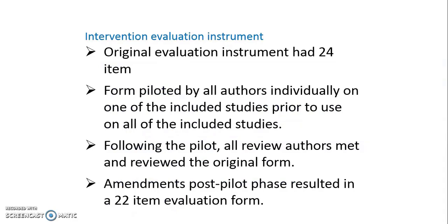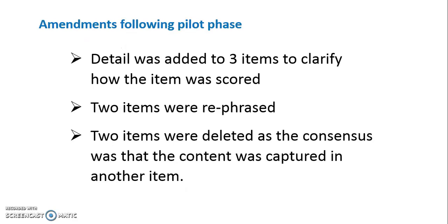Our original evaluation instrument had 24 items. The form was piloted by all authors individually on one of the included studies prior to use on all of the included studies. Following the pilot, all review authors met and reviewed the original form. Amendments post-pilot phase resulted in a 22-item evaluation form. Amendments were made in three main areas: detail was added to three items to clarify how the item was scored; two items were rephrased; and two items were deleted as the consensus was that the content was captured in another item.